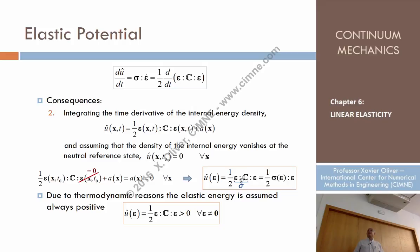So the density of internal energy is one half of epsilon : C : epsilon. And since C times epsilon is sigma, this gives rise to the alternative form: the internal energy is one half of sigma — where sigma depends on epsilon through the constitutive equation — double-dot the strains. That is: U = ½ σ : ε.